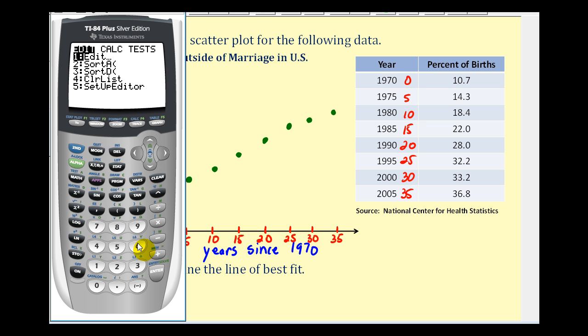So we're going to press stat, enter, clear out all the old data by going to the top of the column, clear, enter, top of column one, clear, enter. So L1 will be the x values and L2 will be the y values.